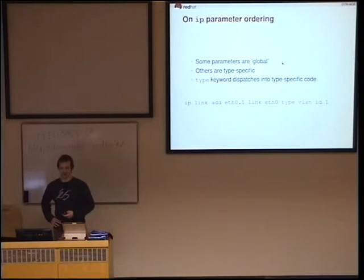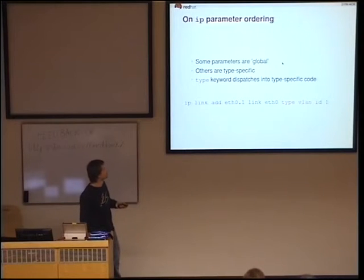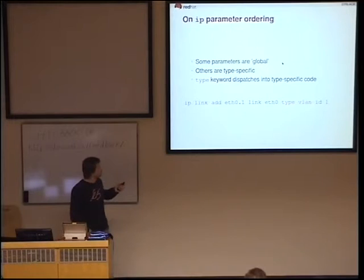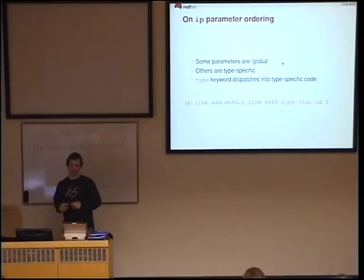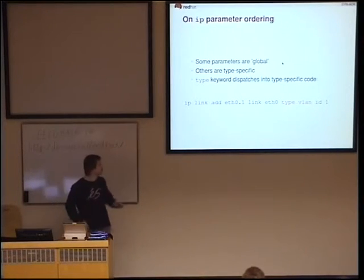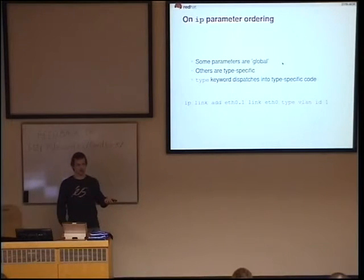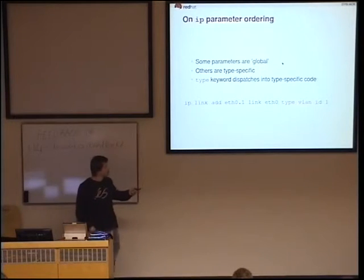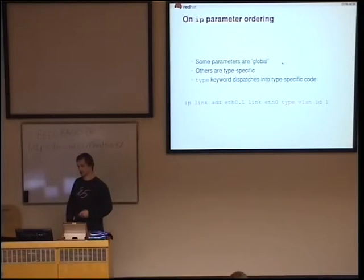Ordering constraints actually make sense, although you wouldn't recognize it if you don't know. The point is that the type keyword secretly dispatches to type-specific code. While the interface name and the link parameter — which says which interface to link this interface to — belong to the generic IP code, the ID is a parameter that belongs to the VLAN-specific code. That's why you have to order it that way. Once you know it, the previous question can simply be answered.